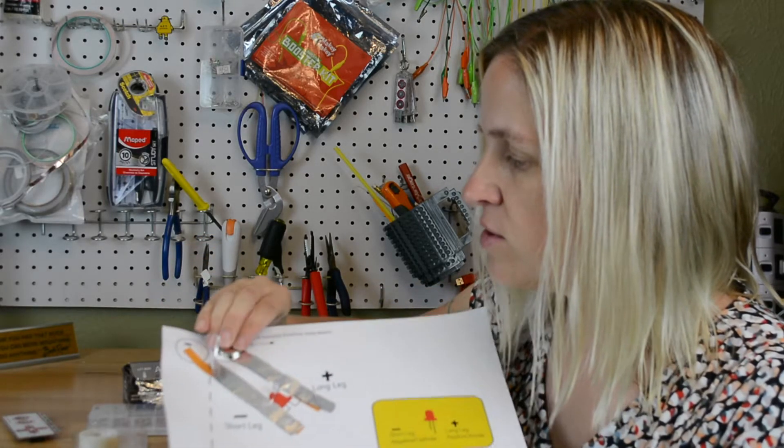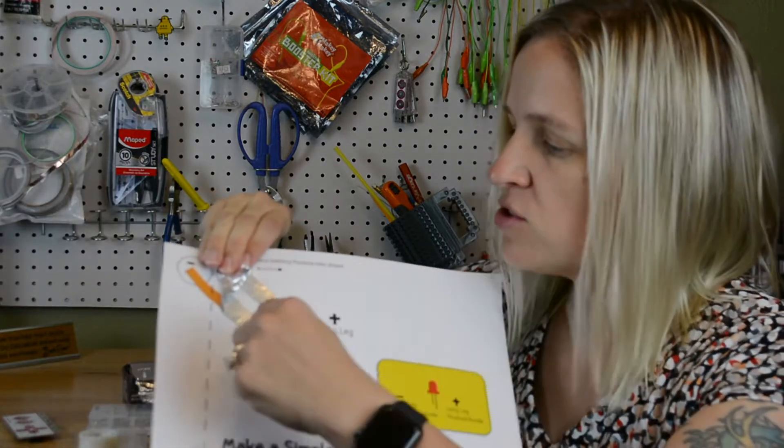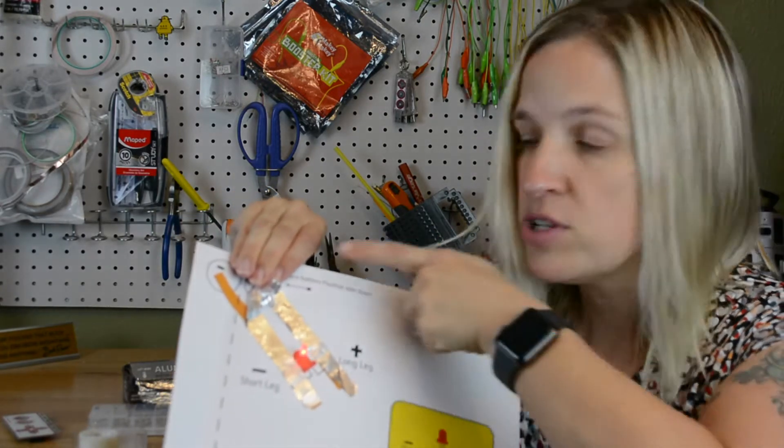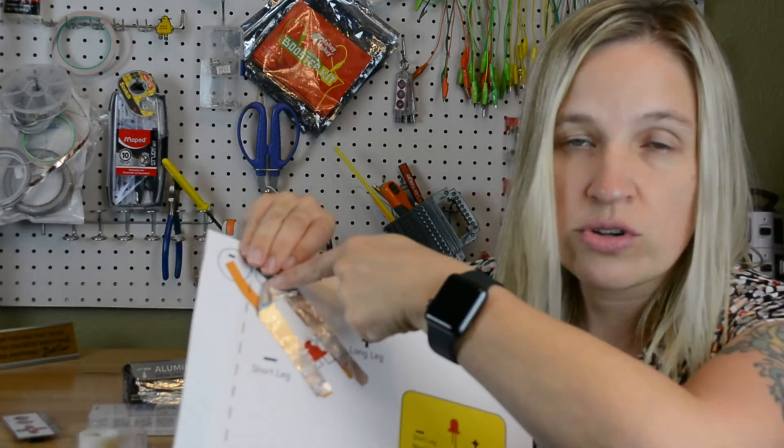There's lots of things that could go wrong because electricity is lazy. When you're putting out your negative and your positive, you have to make sure they never touch or your circuit will short.